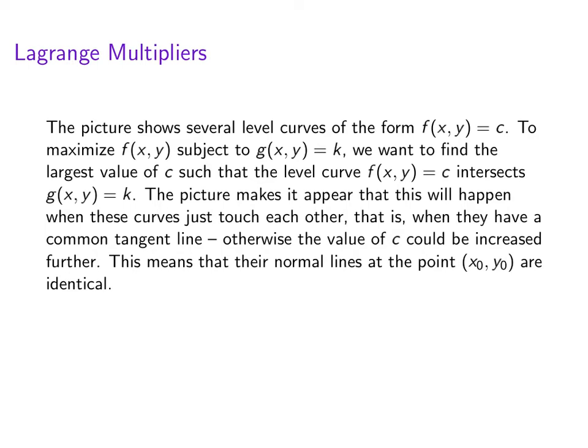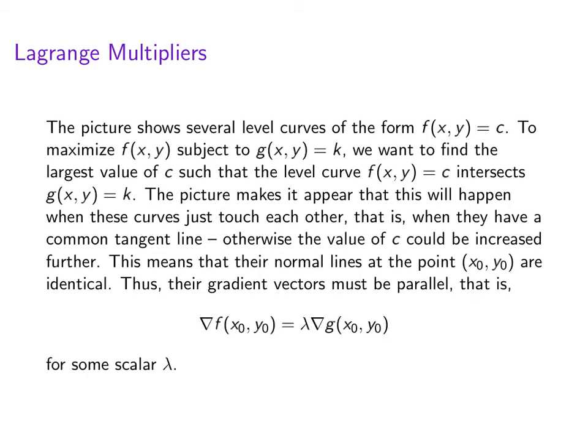So that means their normal lines are identical. We haven't talked about normal lines. A normal line is like a tangent line, except it goes perpendicular to the curve. The direction of a normal line is just a gradient. So the gradients of these two functions must be parallel. So that is to say that del f = lambda times del g. So lambda is just some scalar. Del f is parallel to del g.